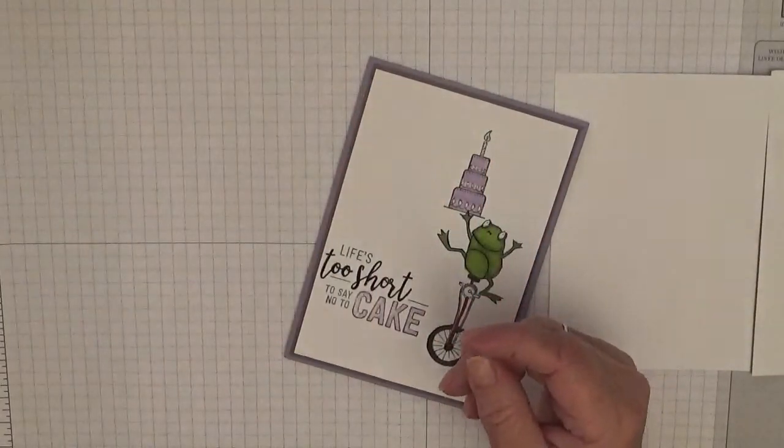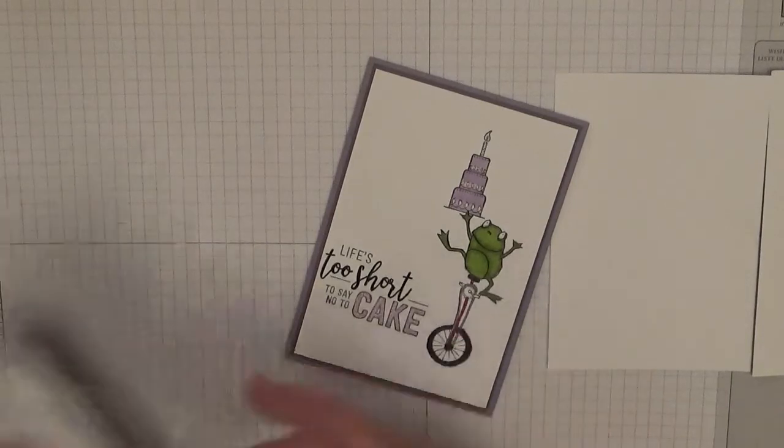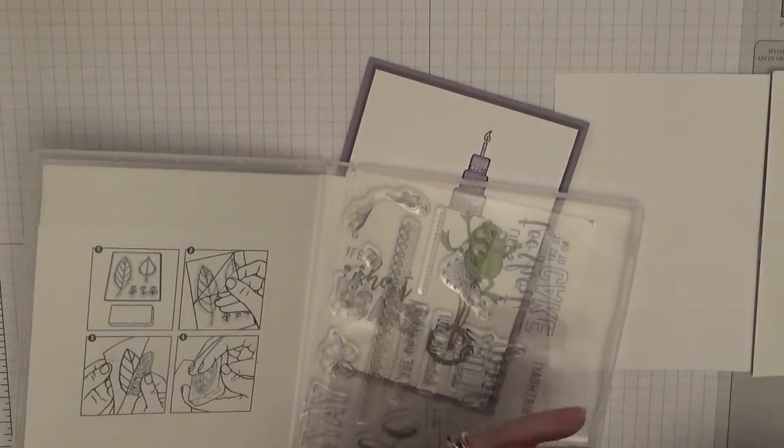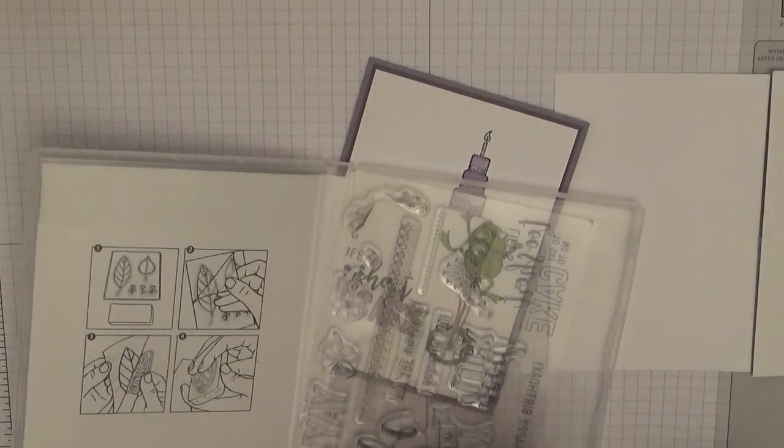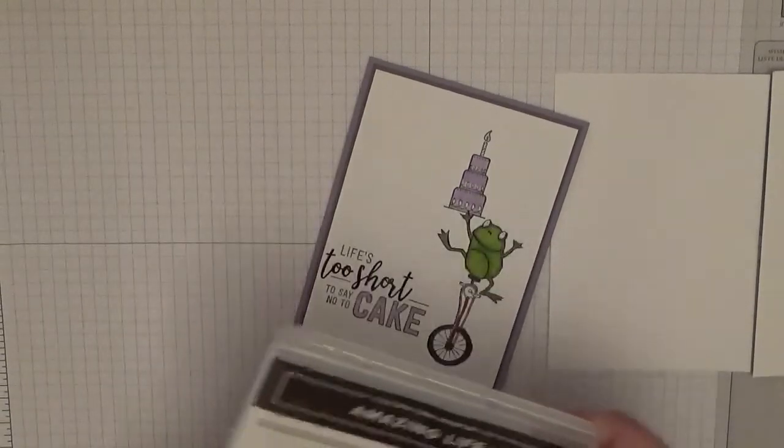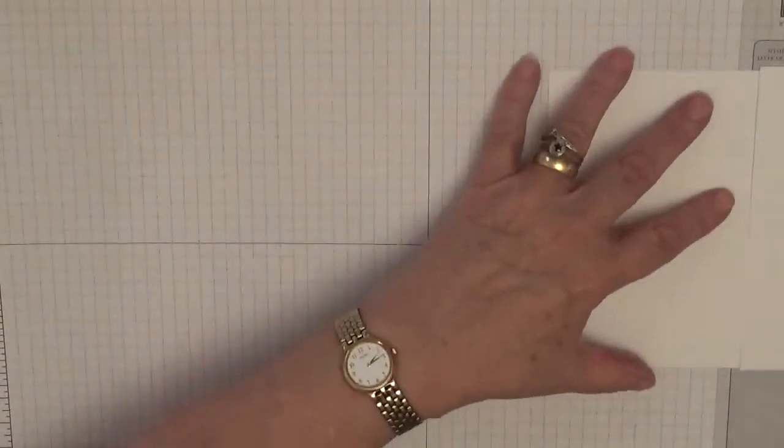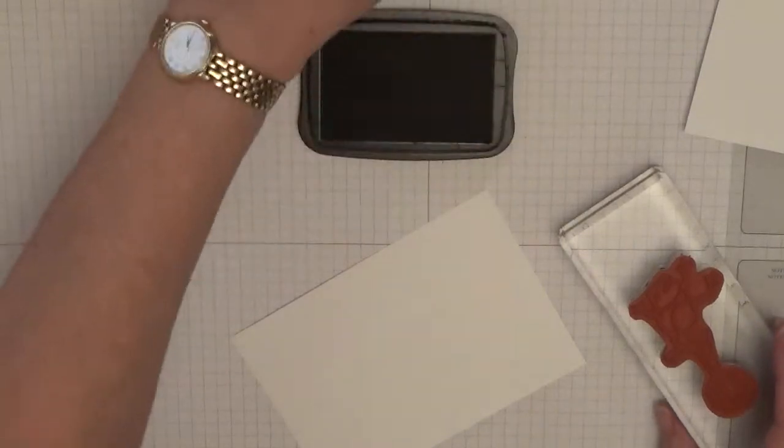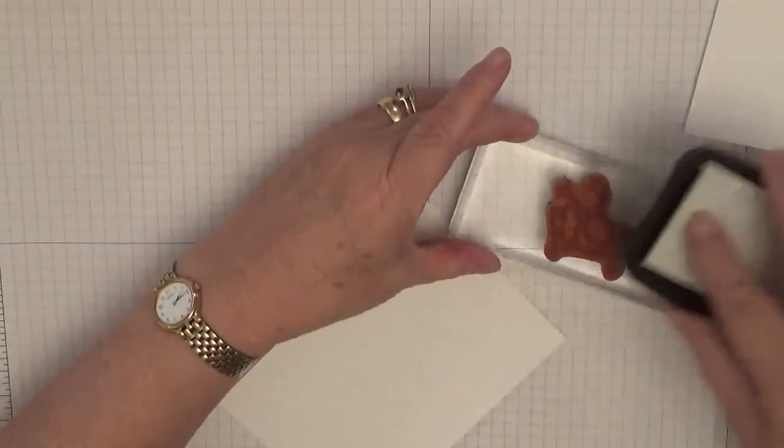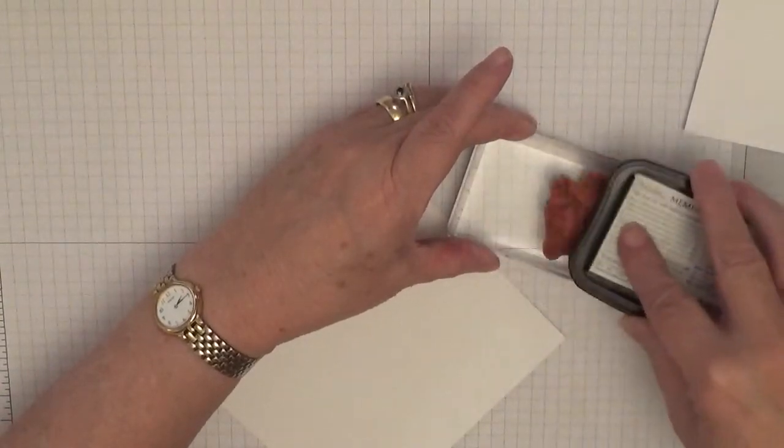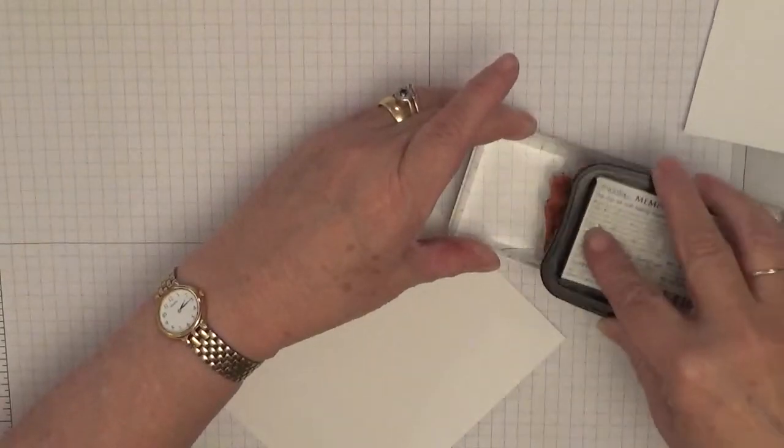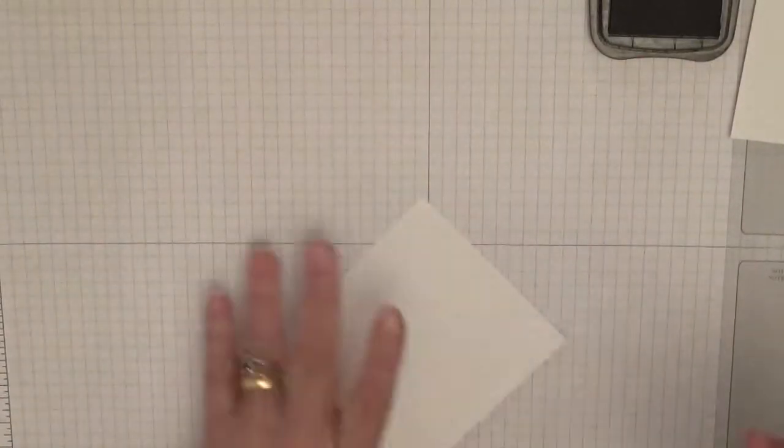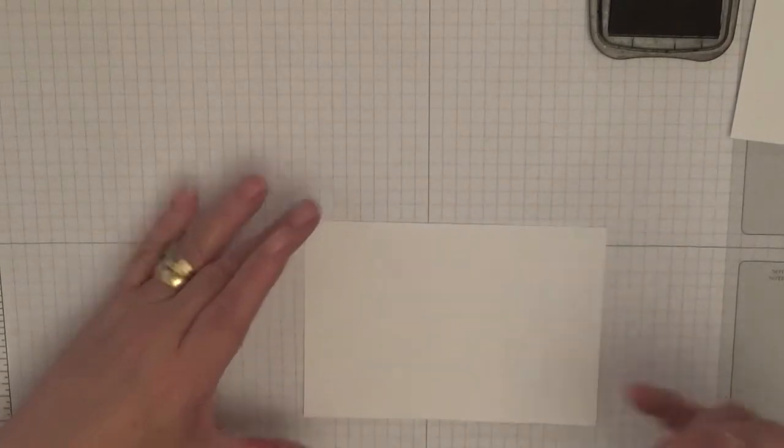I just put the words happy birthday in that one. Let me get happy birthday out and pop it on a block. All right, so to get started we'll need the smaller one of the two whites and we're going to stamp the frog. Cut my block and my stamp and we'll put him to the side.